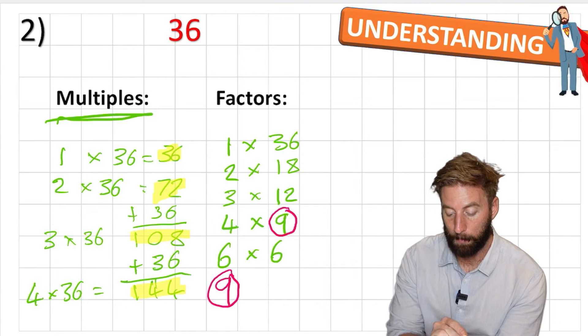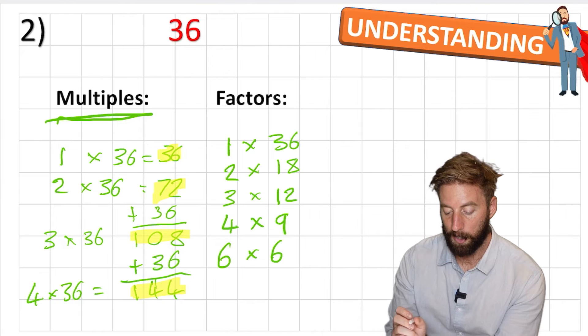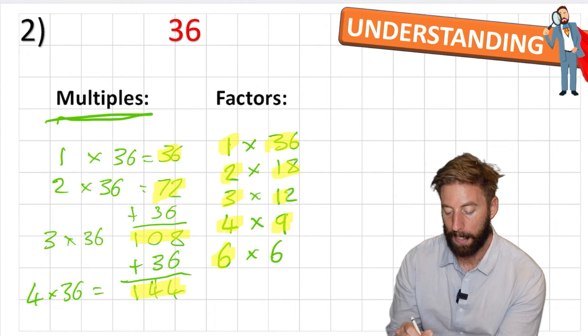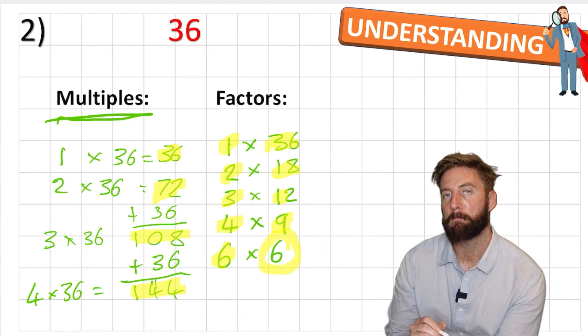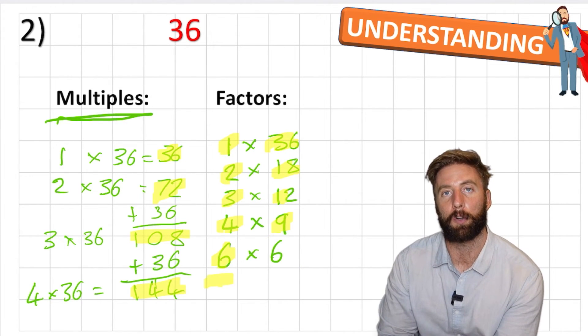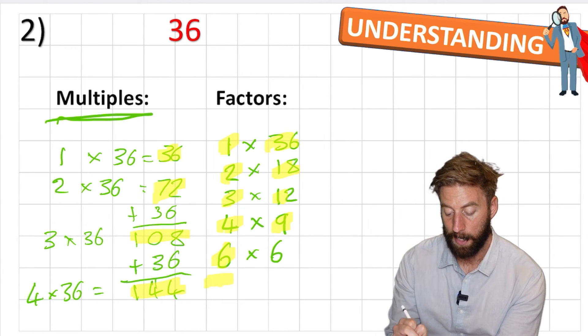So how many factors does 36 have? Let's check. 1, 2, 3, 4, 5, 6, 7, 8, 9, 10. No, because we've already got a 6 here. So we don't need to include this other 6. So if we're talking about how many factors 36 has, it has 10.